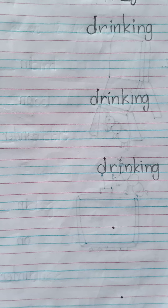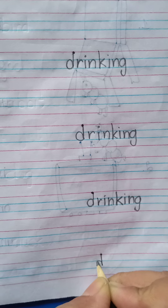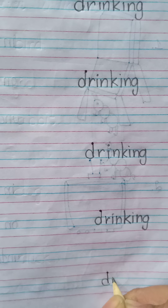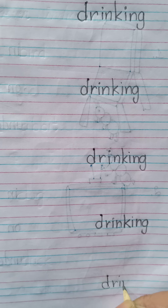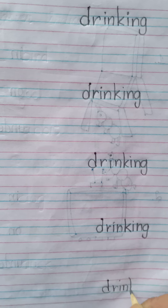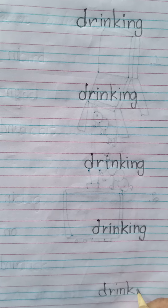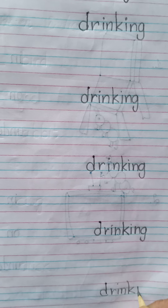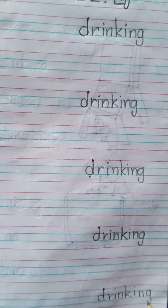Like this we have to write our spellings. Again: D, R — DRI — I, N — IN. And K — drink. And then what we had kept in the '-ING' ending — I, N, G — ING. Drinking.